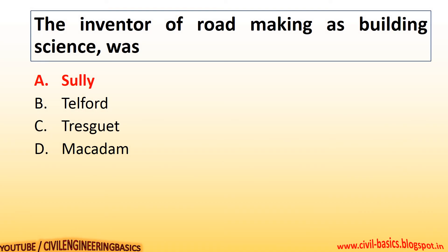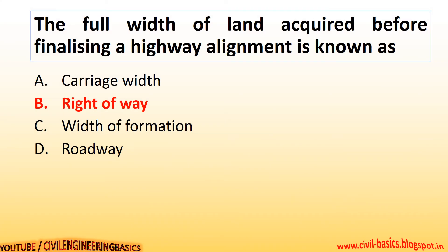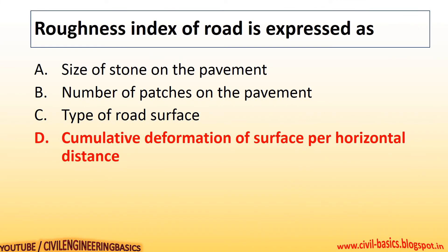The inventor of road making as a building science was Sully. The full width of land acquired before finalizing a highway alignment is known as right of way. The roughness index of a road is expressed as cumulative deformation of surface per horizontal distance.